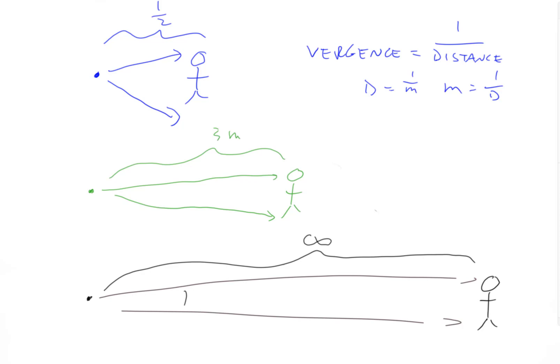So with this first one, the blue guy, what is the vergence? The vergence in diopters equals one over the distance, which is a half a meter. One over a half meter equals two diopters.